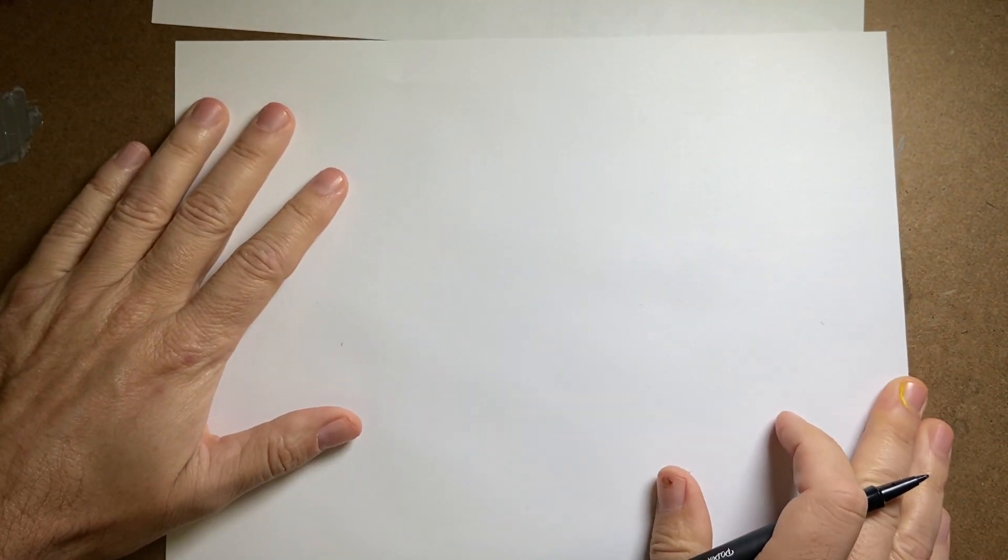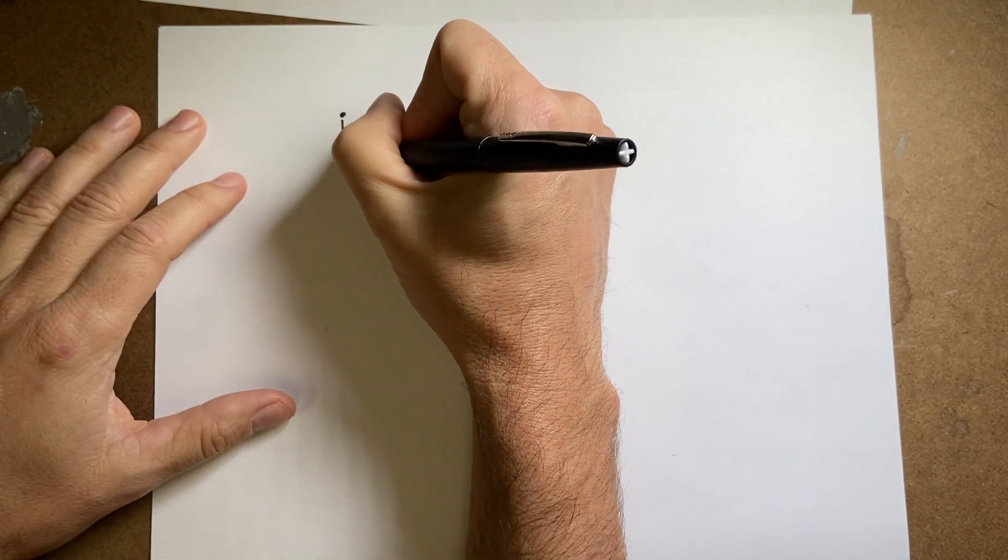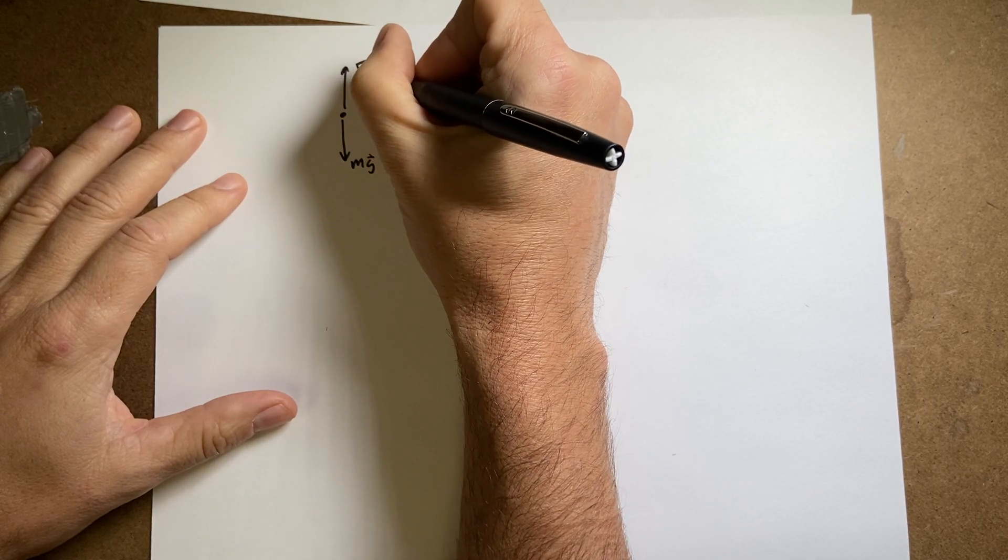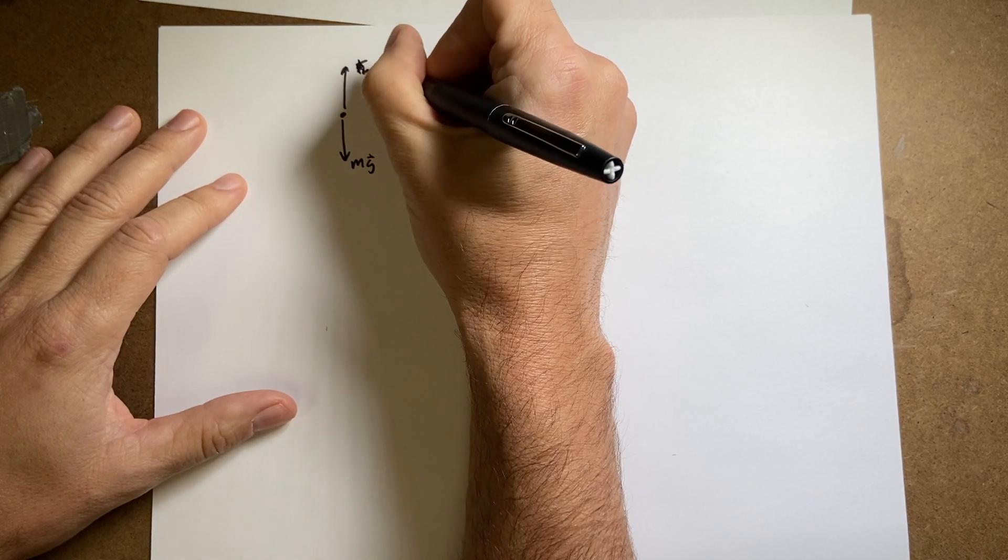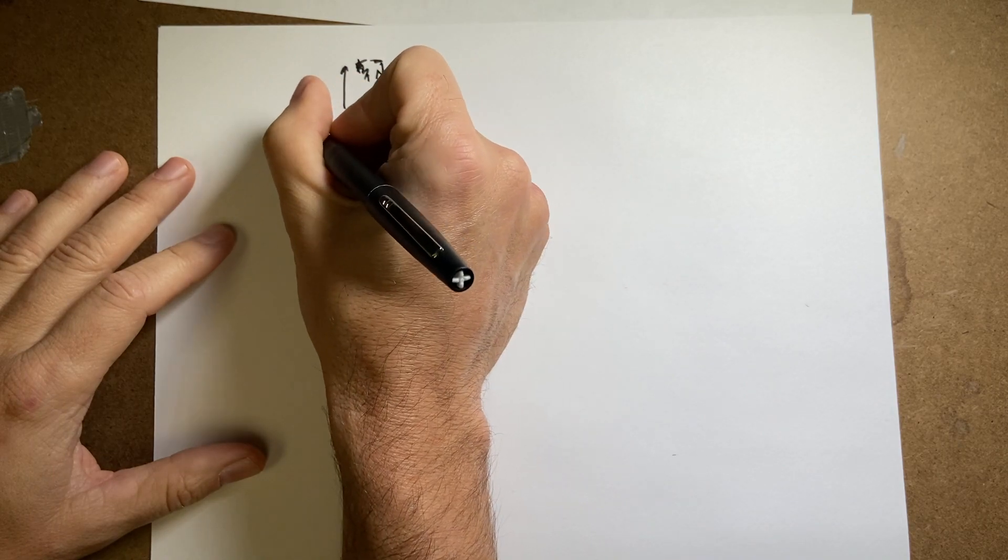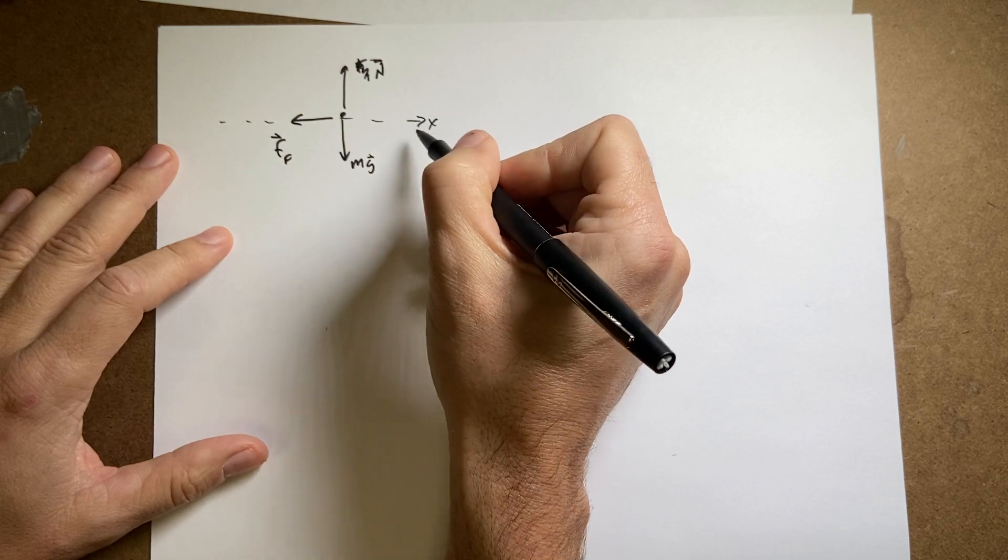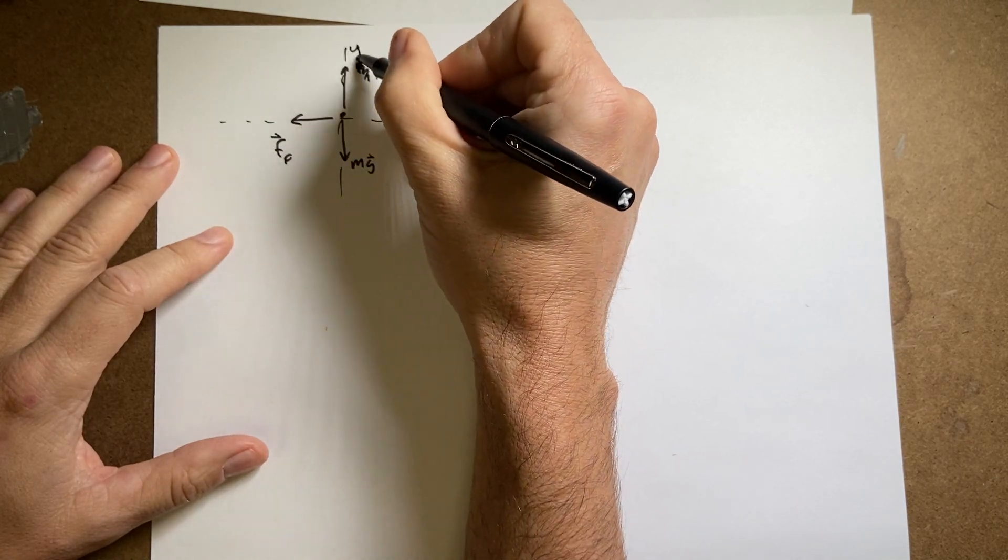And let me redraw my force diagram. So I have mg, I have f friction, no f, I'm sorry, I have the normal force, and then I have the friction going this way, ff. And let's call this the x and the y direction.